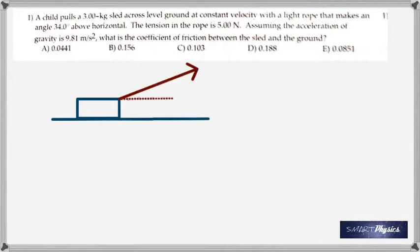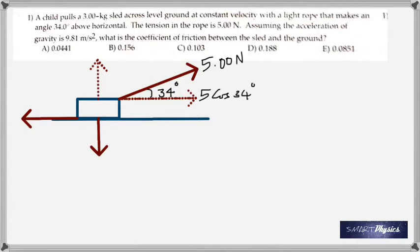Okay, so that's the 3 kilogram sled. The force is being applied at an angle of 34 degrees. The tension is 5 newtons. Now here we have the weight of the sled acting vertically down mg. That's the normal reaction and friction is opposite to the motion. And then this tension is given as 5 newtons and that has to be resolved into two components. One is going to be the horizontal which is 5 cos 34 and the vertical is going to be 5 sin 34.